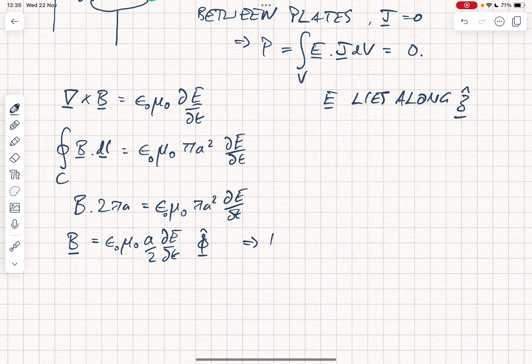That, of course, tells us that the H field is going to equal epsilon naught A over 2 dE by dt in the phi direction.